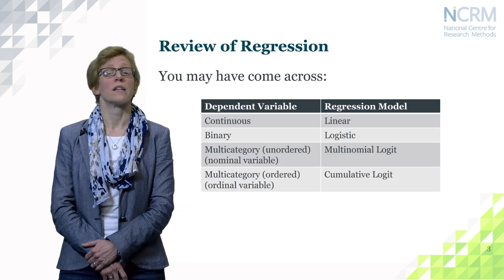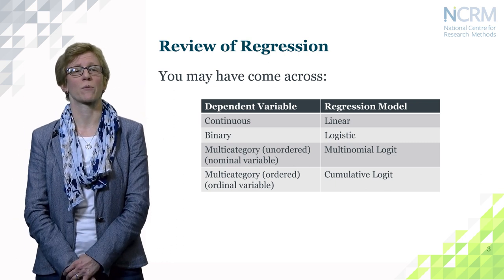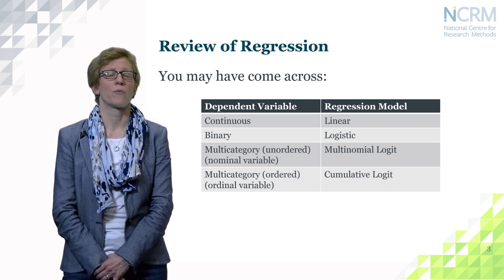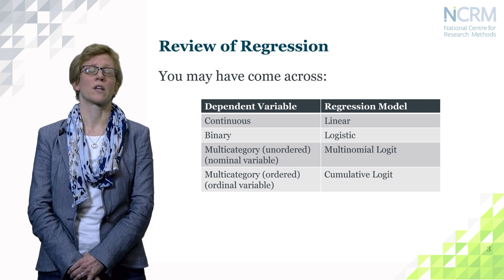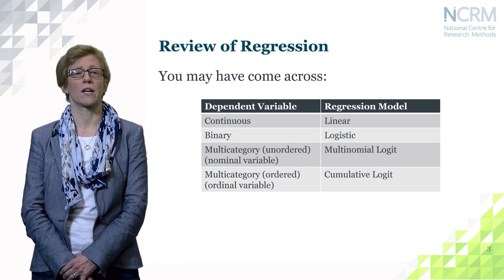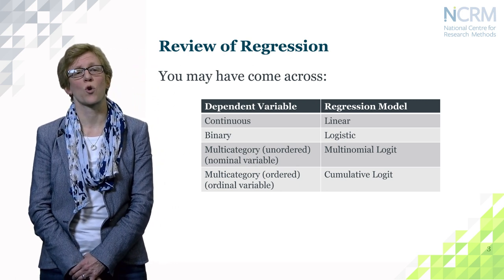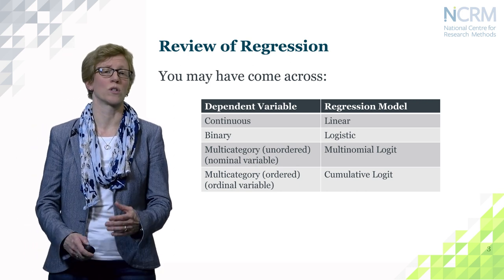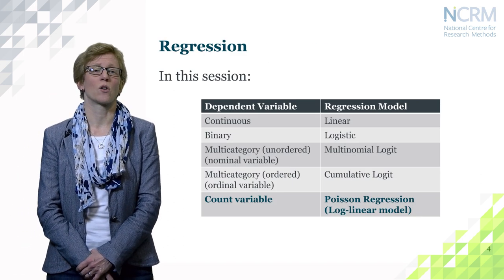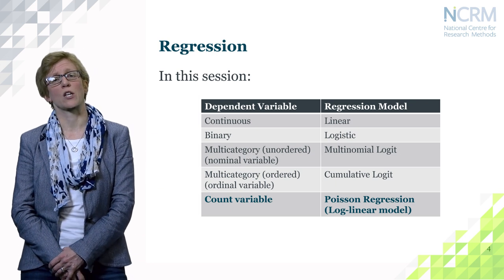You may have come across different types of regression models already, for example a linear regression model for a continuous dependent variable, or logistic regression models for a binary outcome variable. There are obviously other types of regression as well that are part of the generalised linear models — for example the multinomial logit model for a multi-category unordered variable, or ordinal regression. Here we are going to go a step further and look at an outcome variable that is a count variable using Poisson regression, sometimes also called a log-linear model in the literature.